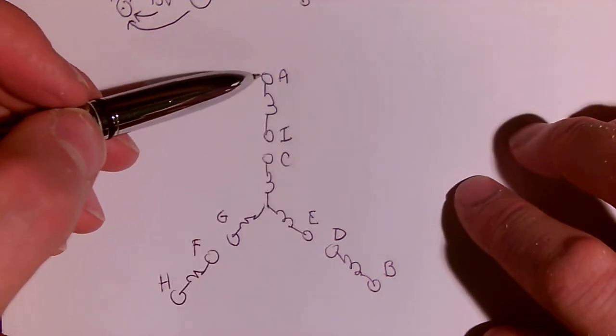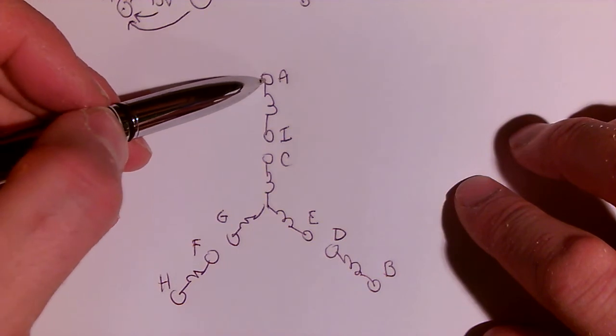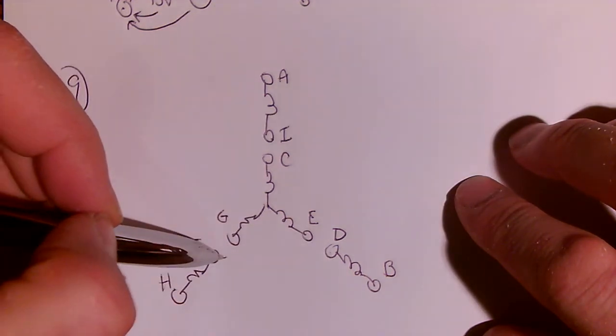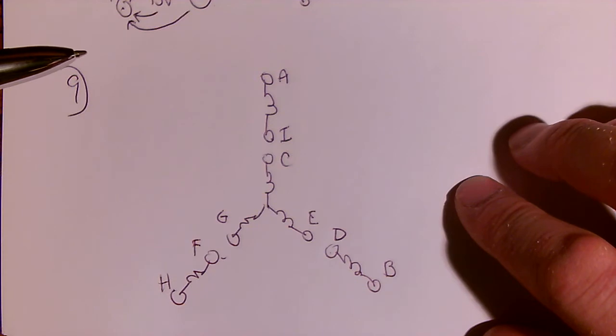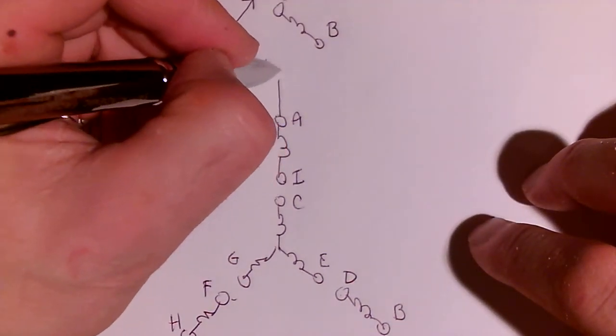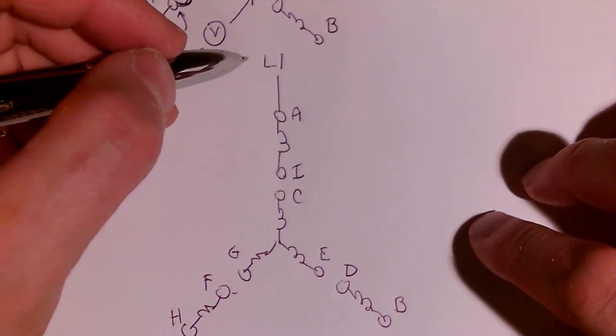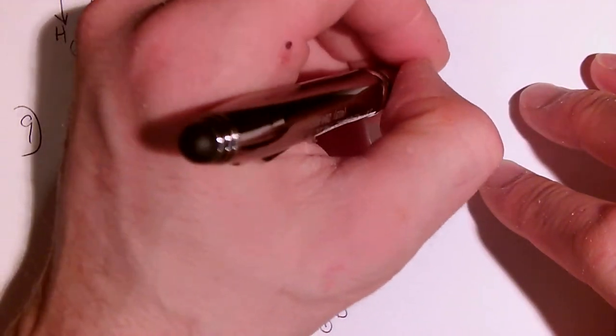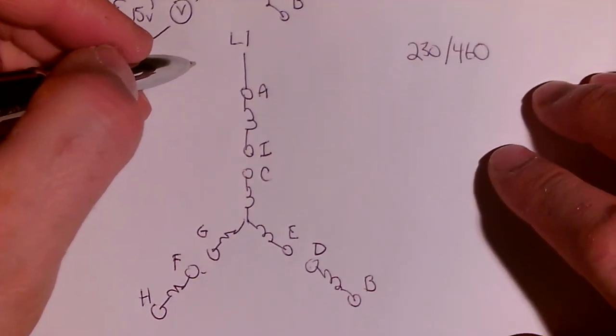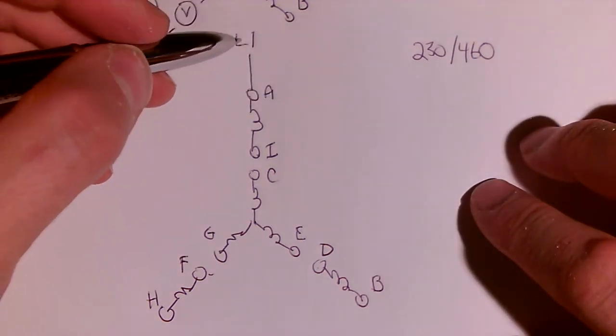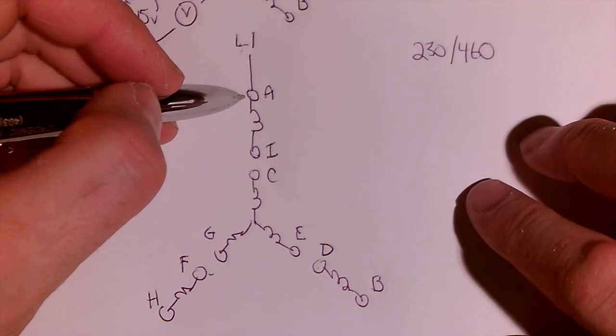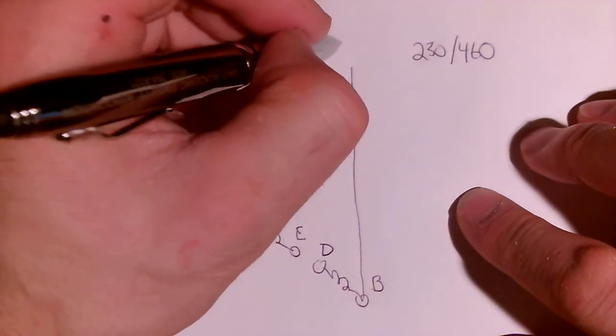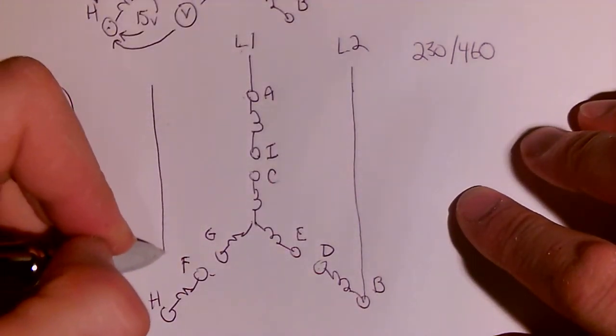And a little review on the lettering or NEMA numbering I should say. That's T1, T2, T3, T4, T5, T6, T7, T8, and T9. So we're going to bring L1, three phase power. Now this motor is a, well it's actually a 230 volt slash 460. It's a dual voltage motor. And we have access to 240 volts in the lab. So we're going to take L1 to the A. And we're going to take L2 to B. And we're going to take L3 to H.